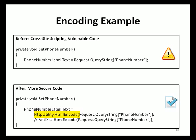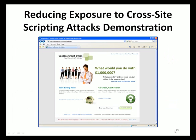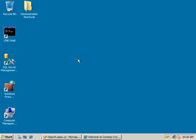Let's see a demonstration of how encoding and other ASP.NET security controls could have been used to reduce the exposure to the cross-site scripting attacks demonstrated earlier. Protecting web-based applications against cross-site scripting attacks requires that developers utilize a series of defensive measures and best practices. Relying on just a single defensive measure alone may not be sufficient. In this demonstration, you will see how the Contoso Credit Union code could have been modified to use encoding and ASP.NET's validate request option.